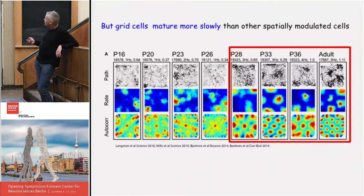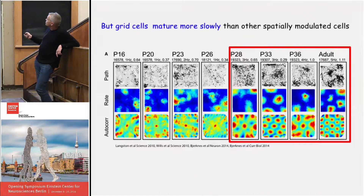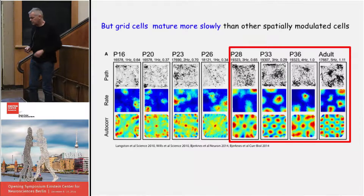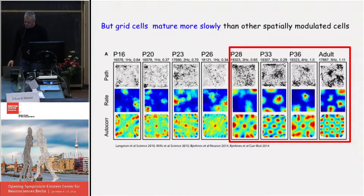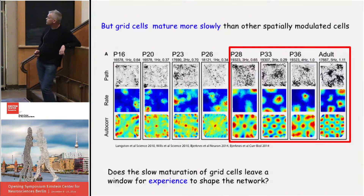This suggests that most cell types are present from very early on, but it's slightly different for grid cells. You can see grid patterns from as early as P16, but the regularity doesn't really appear until animals reach four to even five weeks of age. From P16 to P28 the cells have distinct firing fields and are more regular than chance, but not by a lot. It actually takes two weeks of development before they reach the degree of periodicity seen in adults.